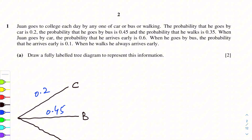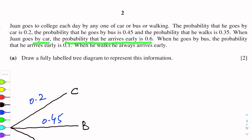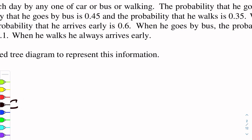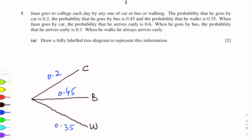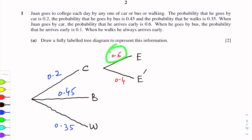Next, when Johan goes by car, the probability that he arrives early is 0.6, so the probability of not early is 0.4. We draw two branches here for early and not early — using E and E' (E dash) to represent not early. So early probability for car is 0.6, and not early is 0.4.